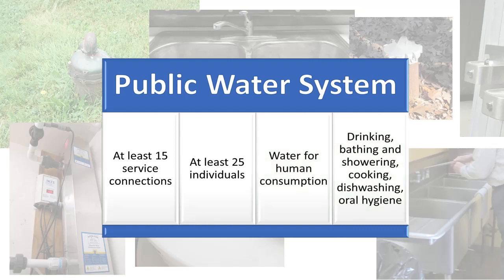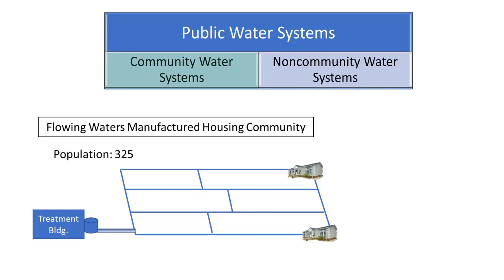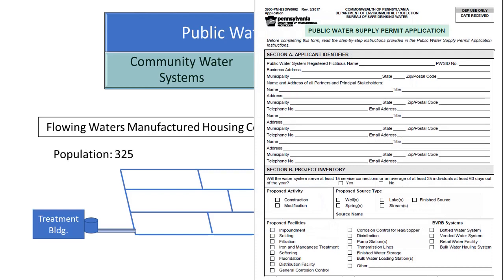You may need to obtain either a permit or non-community water system approval depending on your system. Public water systems include both community and non-community water systems. Everyone is familiar with community water systems as they serve people at their primary residences each year. Community water systems can serve municipalities, subdivisions, or mobile home parks, for example. Community water systems are required to go through an approval process that involves submitting a public water supply permit application. Please follow the link below for more information on the community water system approval process.